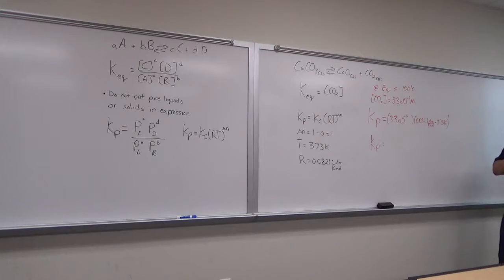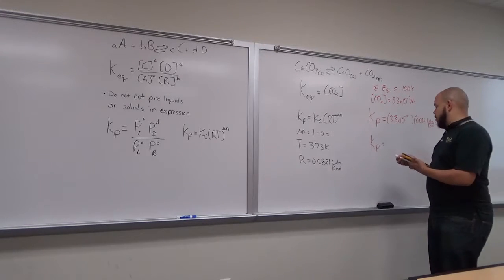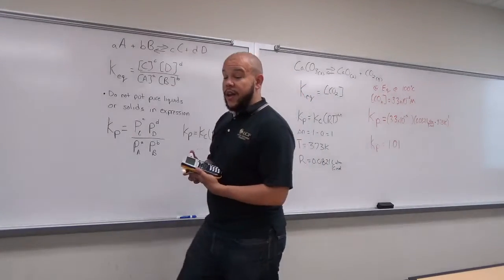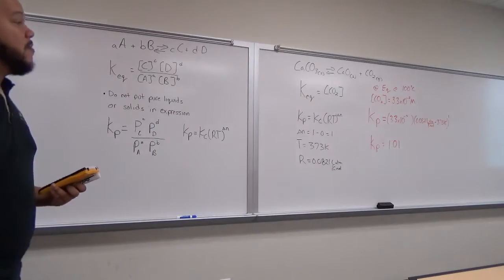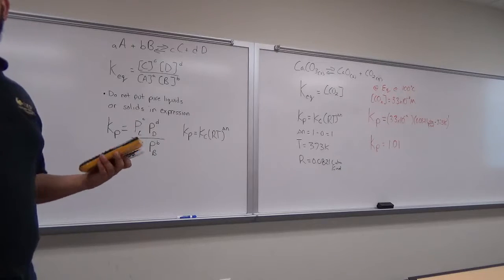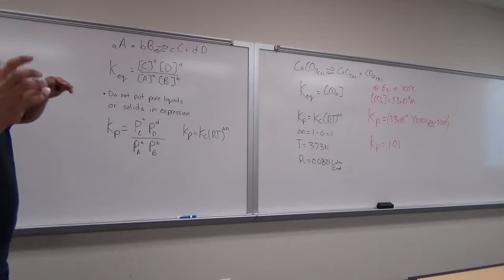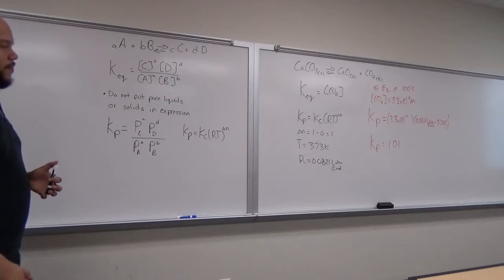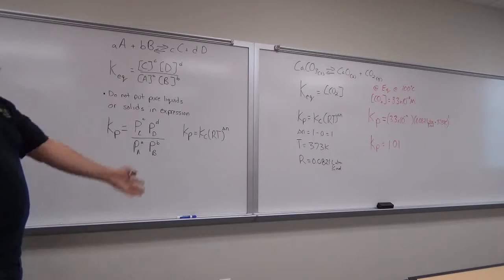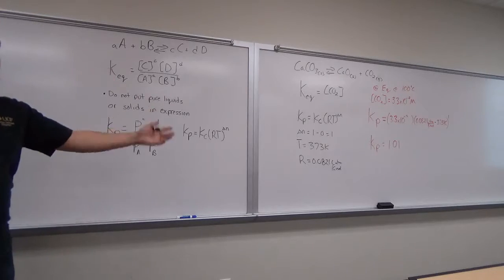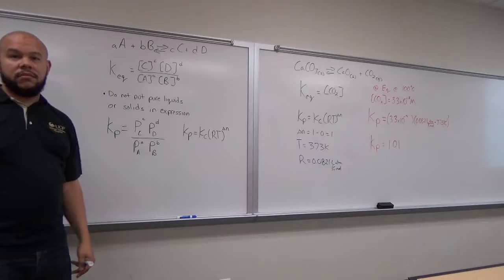Doing the multiplication: 3.3 × 10⁻² times 0.0821 times 373 gives approximately 1.01. Notice that our Kc and Kp are not equivalent — they are not the same. Kp and Kc can be very different values, and it would be very difficult to guess one from the other.